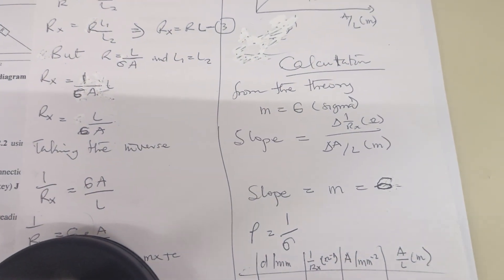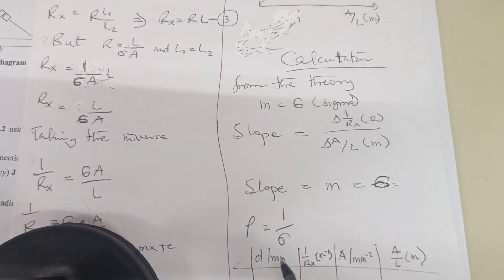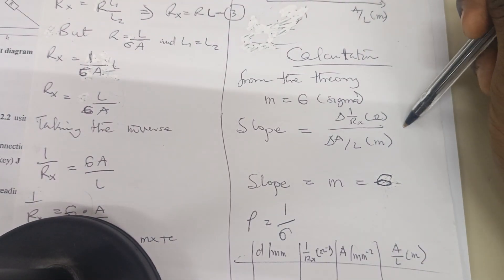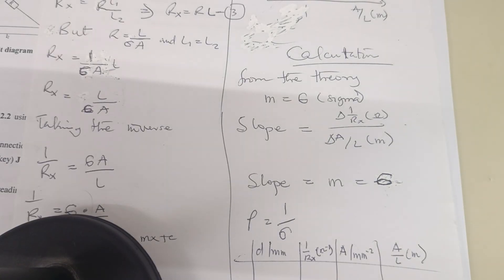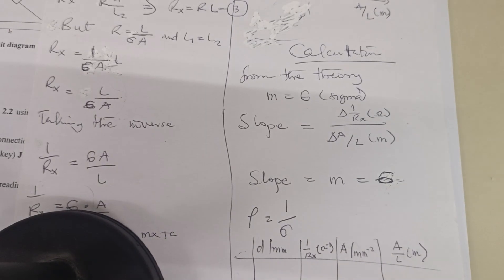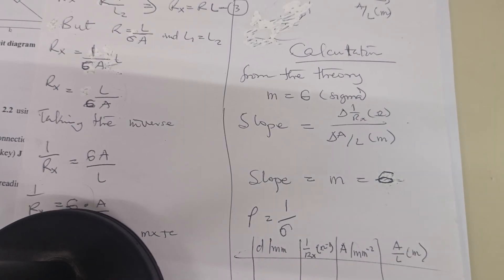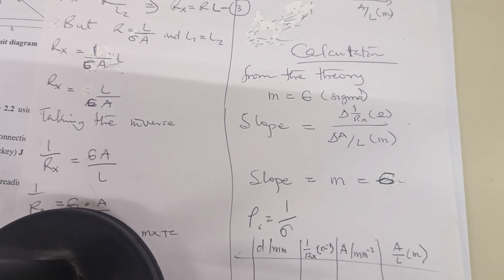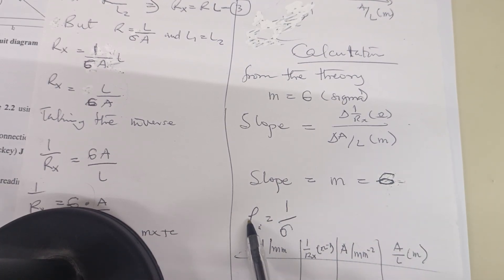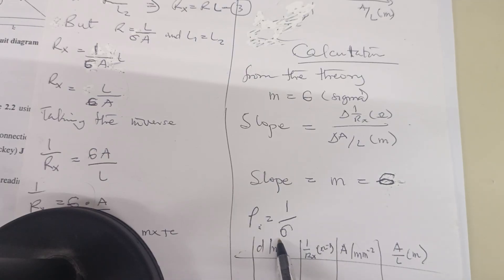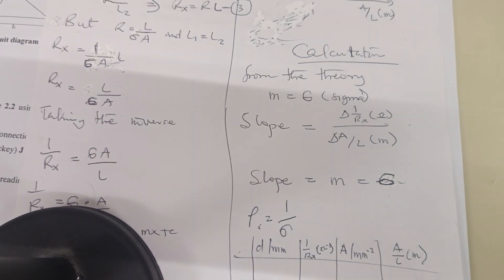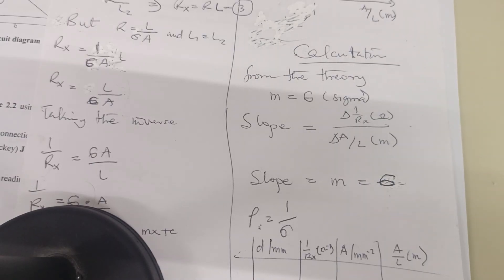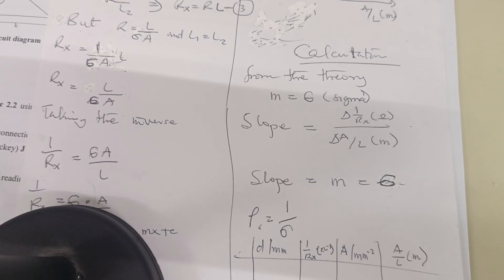To find the resistivity, we take the inverse of the conductivity: resistivity ρ = 1/σ. So under calculations, you find the slope, equate it to the conductivity, then take the inverse to get the resistivity. That's the Wheatstone bridge experiment — thank you very much.